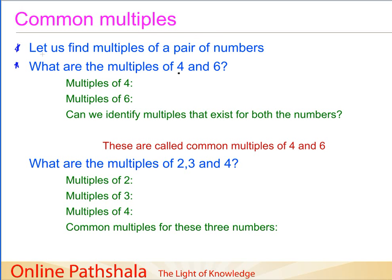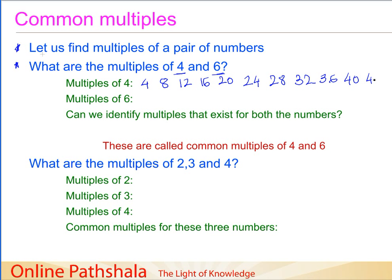We take two numbers, that is number 4 and number 6, and let us write down the multiples for each. Starting with 4: 4, 8, 12, 16, 20, 24, 28, 32, 36, 40 — and we could write more, for example 44, 48, and so on, but we will limit ourselves to these multiples for now.